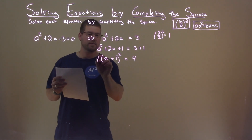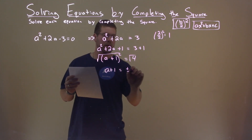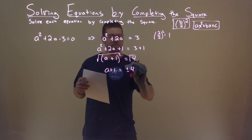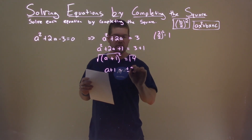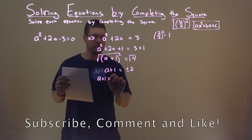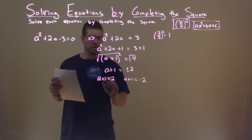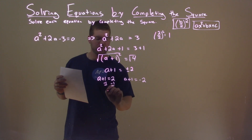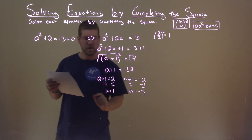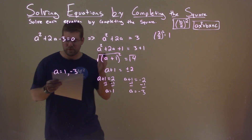We now can solve by taking the square root of both sides, and we have A plus 1 equals plus or minus 2. We can write it as: A plus 1 equals positive 2, and A plus 1 equals negative 2. Subtracting 1 from both sides: A equals 1. Subtracting 1 from both sides: A equals negative 3. So my two solutions are A equals positive 1 and negative 3.